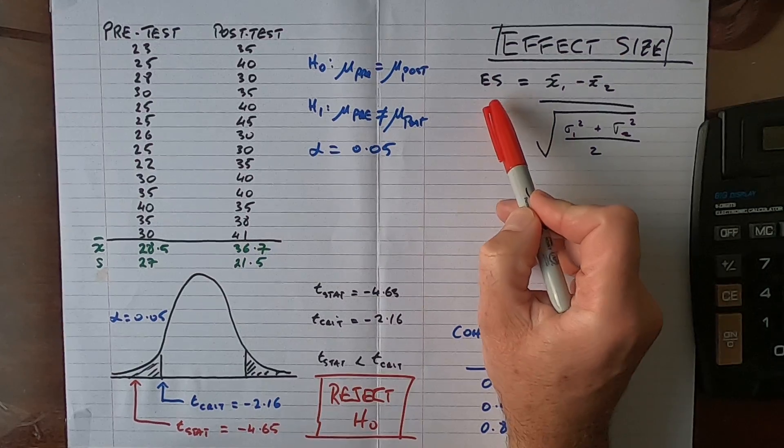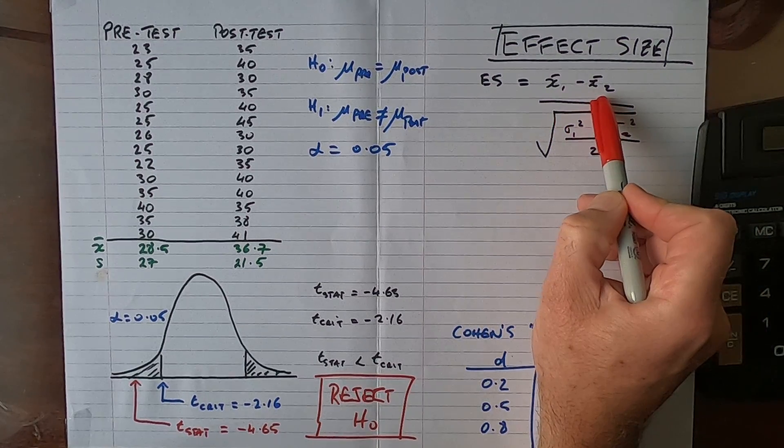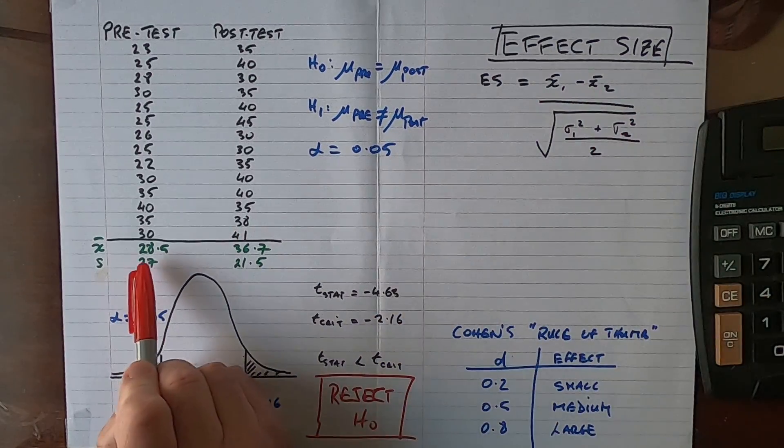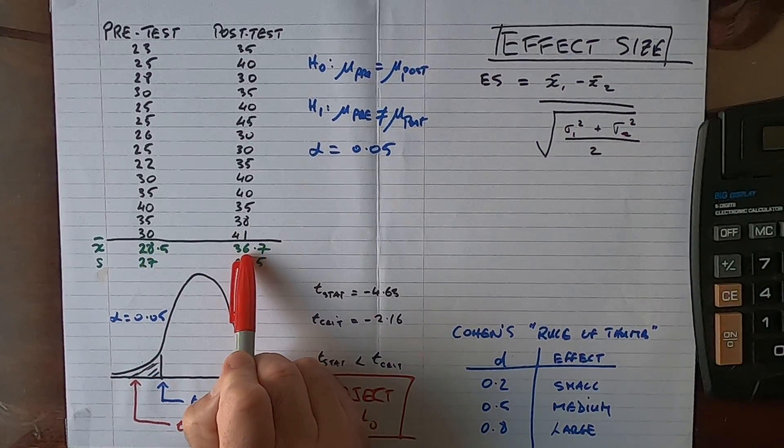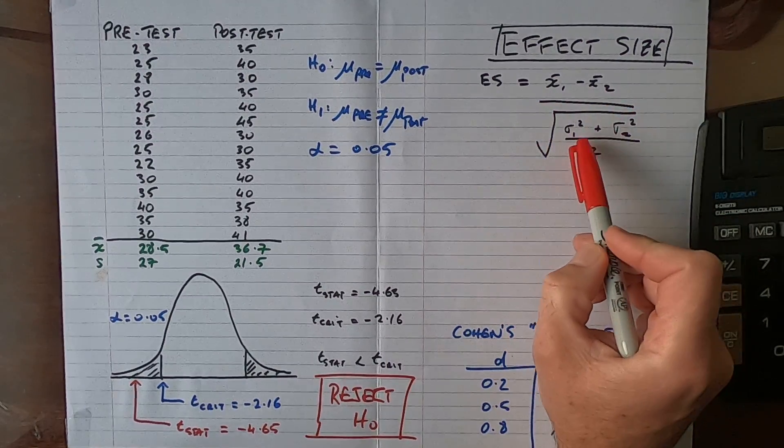ES is for effect size. On the top of the formula we subtract one sample mean from the other, so that's x-bar 1 minus x-bar 2, so that's going to be 28.5 minus 36.7 in this case here.